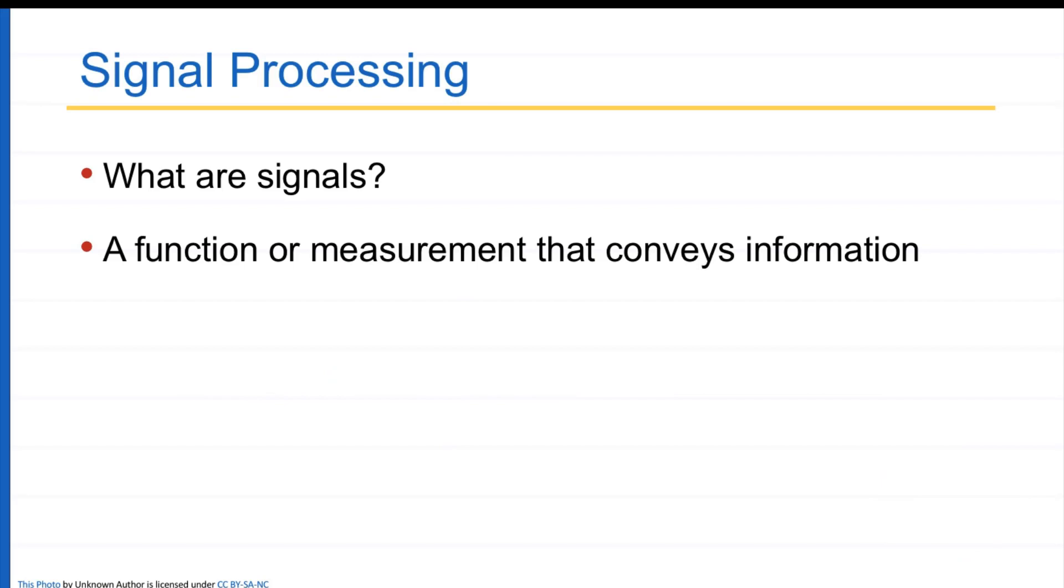Signal processing. What is signal processing? Of course, I don't expect that people will come with a background of signal processing, but if you know a little bit, that is good. What are signals? Signal is a function or a measurement that conveys some information. You know some structure in the measurement or in the function and you can extract useful information from that signal.